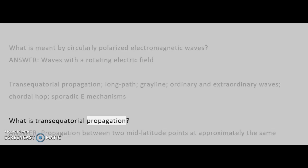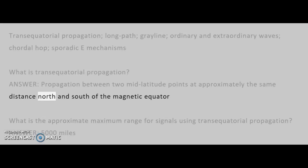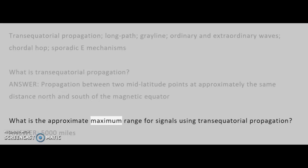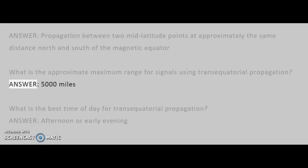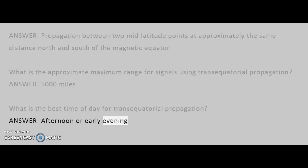What is trans-equatorial propagation? Answer: propagation between two mid-latitude points at approximately the same distance north and south of the magnetic equator. What is the approximate maximum range for signals using trans-equatorial propagation? Answer: 5,000 miles. What is the best time of day for trans-equatorial propagation? Answer: afternoon or early evening.